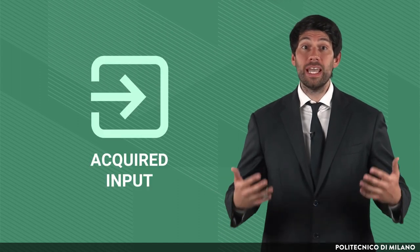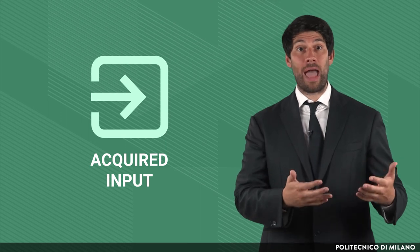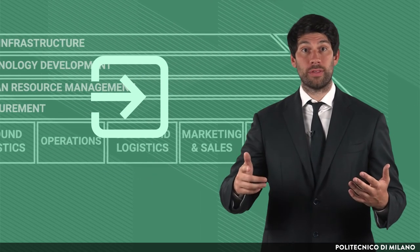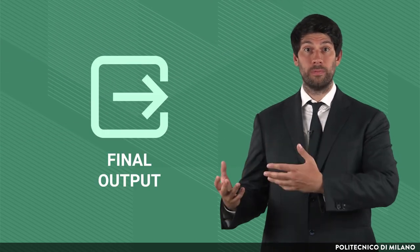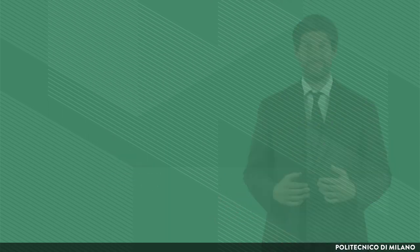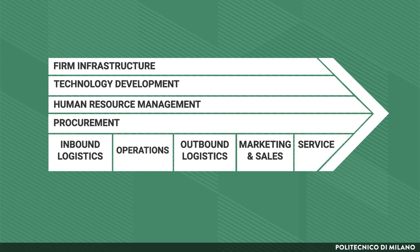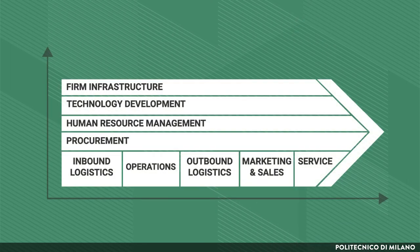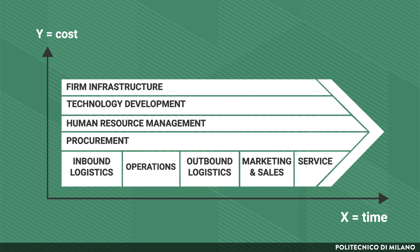Acquired inputs, brought into the company thanks to inbound logistics, go through the transformation process activities and are turned into a final output, either physical or intangible. To show this process through a graph, we take a generic value chain with primary activities at its basis and cross-cutting support activities at the top. We associate to this the positive quadrant of a Cartesian coordinate system, marking on the x-axis the time factor and on the y-axis the cost factor on one side and the value factor on the other.